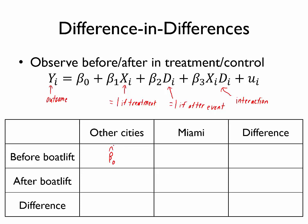If I were to look in Miami before the boat lift, you would notice that the treatment X is equal to one, but D is still equal to zero because we're before the boat lift. The interaction is again zero. And so I would be left with β̂₀ + β̂₁ because β̂₁ is multiplied by X equals one. The others are multiplied by zero.